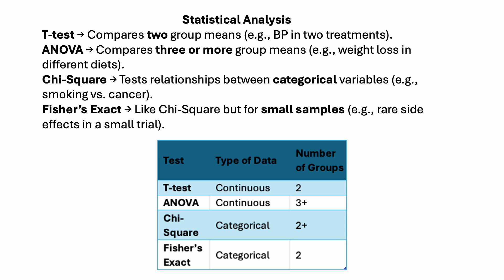Now our last section of content is statistical analysis. I'm going to go over the different types of tests they like to test on USMLE. The t-test will compare two group means — it's used to compare two different groups with continuous data and cannot be used for more than two groups. However, if you have more than two groups, you can use ANOVA, which compares three or more group means with continuous variables.